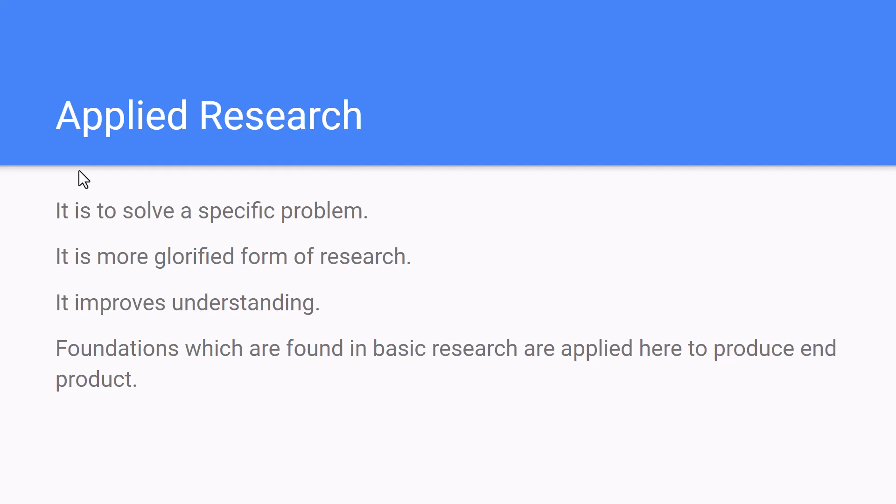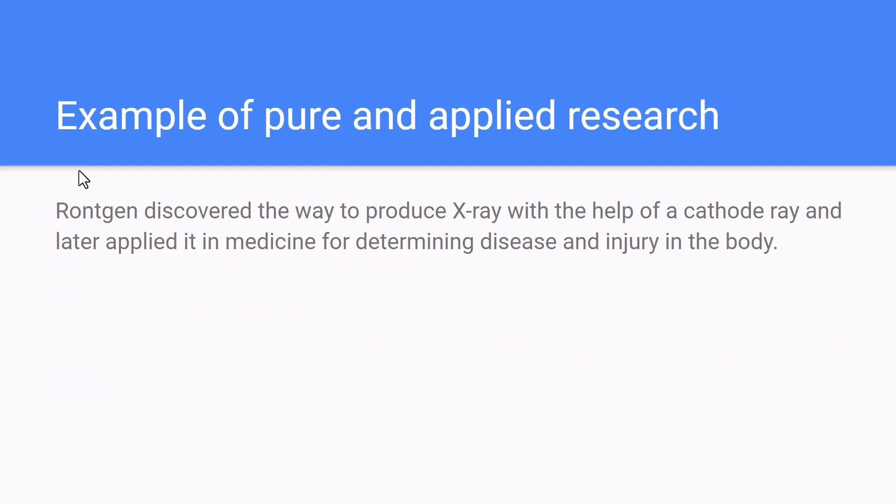In applied research, whatever theoretical information was gathered in pure research is made use of to find solutions to specific problems. It is a more developed form of research — it improves understanding using foundations found in basic research and applies them to produce an end product.